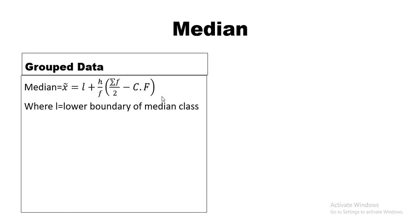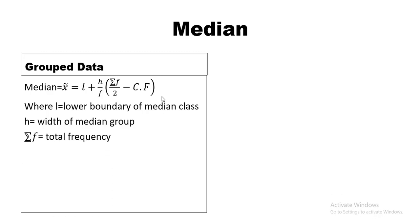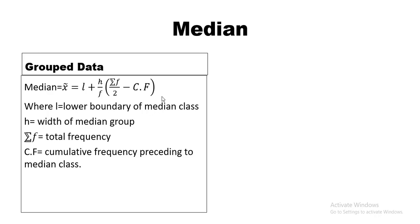L represents the lower boundary of the median class, and H is the height or width of the median group. Since we are dealing with equal class sizes, the height is the same for all classes. When unequal classes are given, we take the height of the median group only. ΣF represents the total frequency, and CF represents the cumulative frequency preceding the median class.